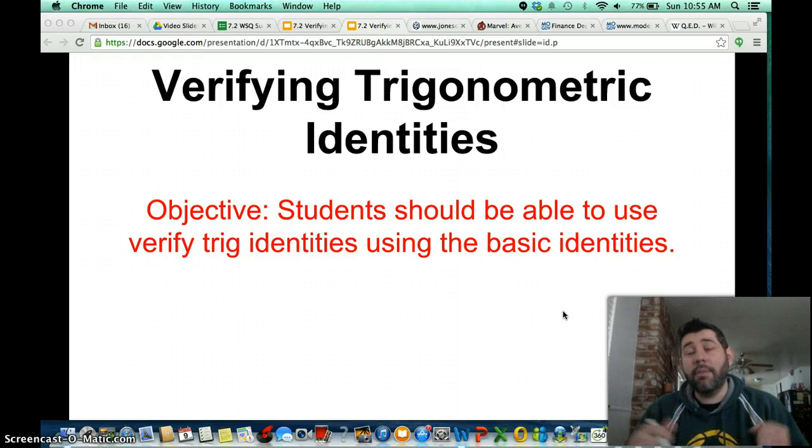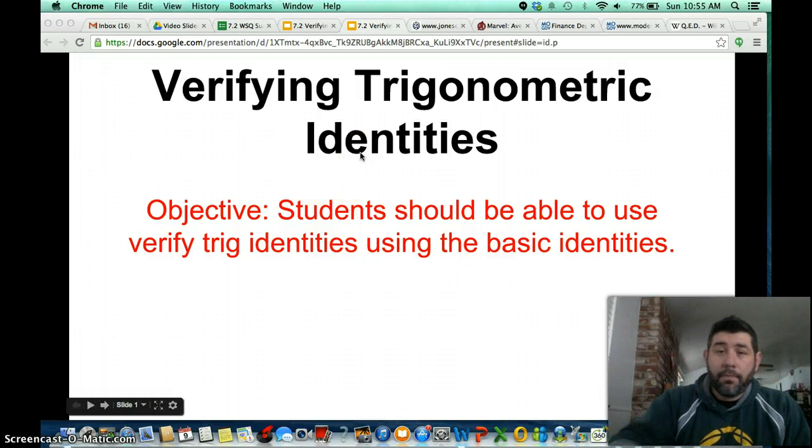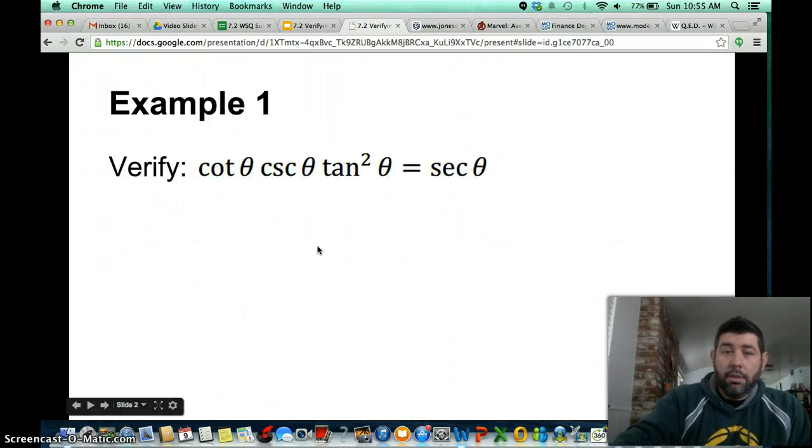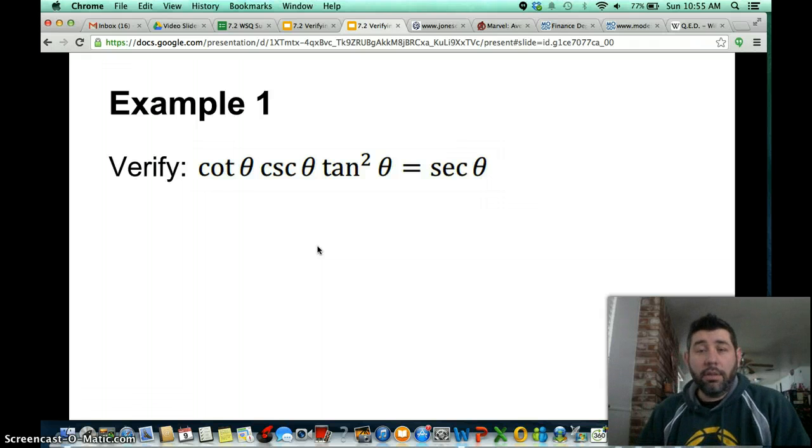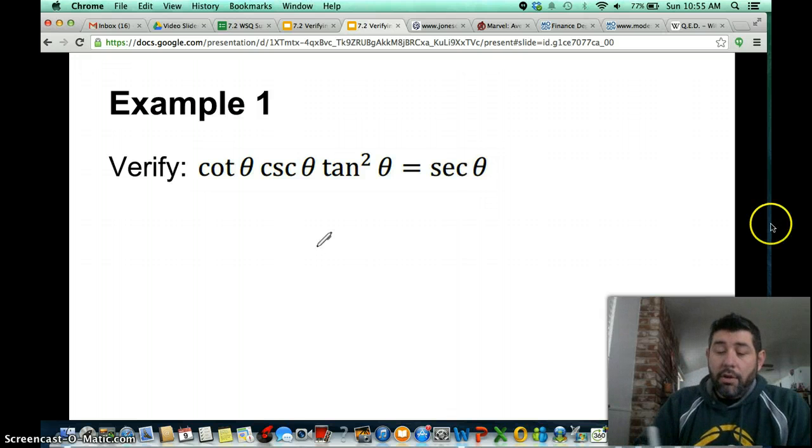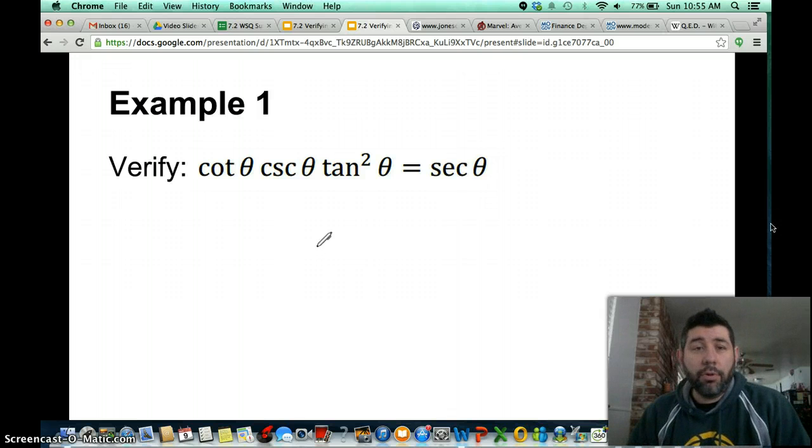So let's take a look. I'm going to do three examples and have three practice problems for you. So let's take a look at the first example. We'll verify that the cotangent theta, cosecant theta, tangent squared theta is equal to secant theta.